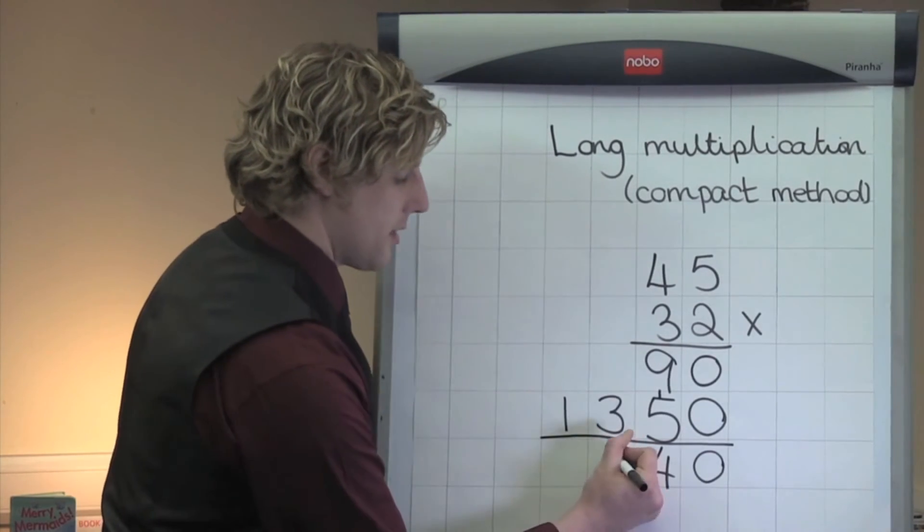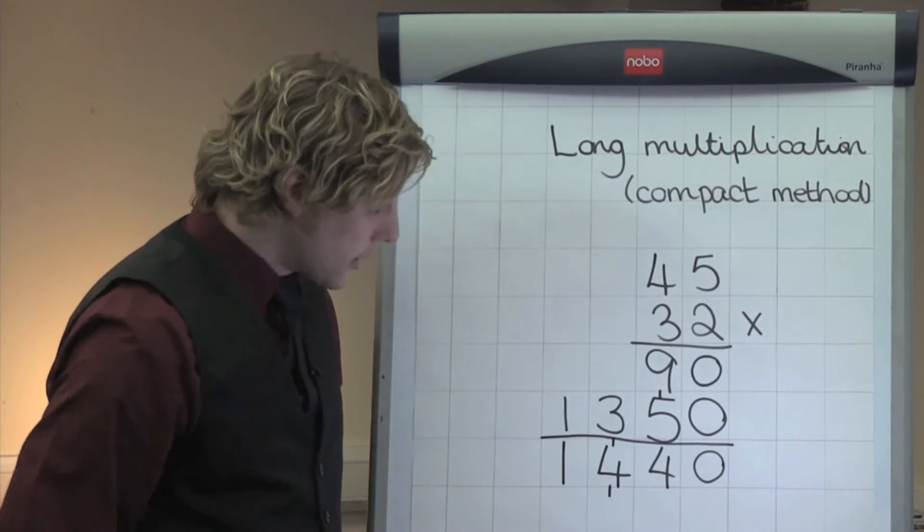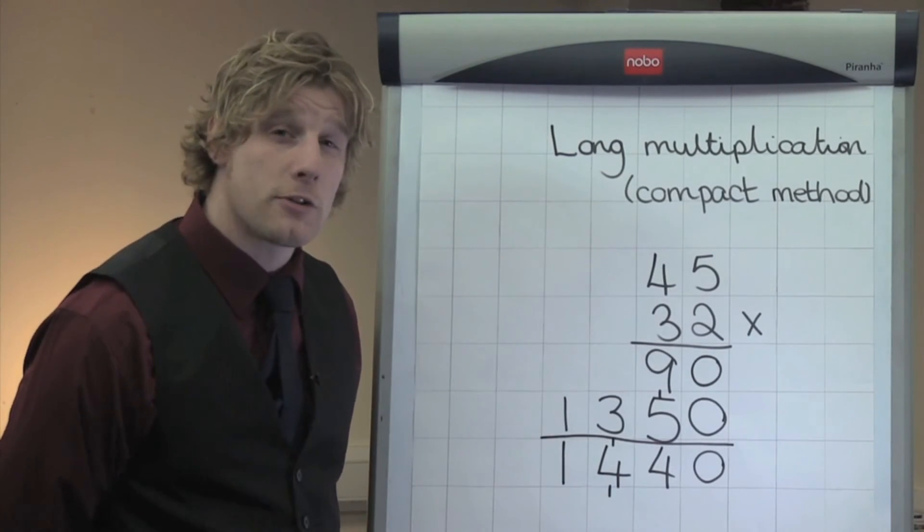3 plus 1 is 4. And then 1 in the thousands column gives me a final answer of 1,440.